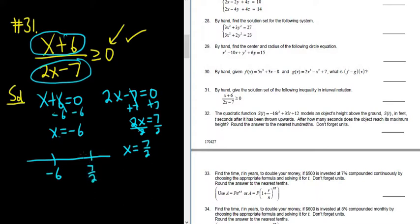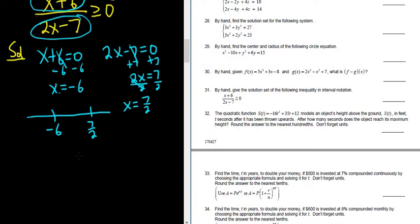Now you have to pick test points. What you're supposed to do is pick numbers and plug them in to your inequality. So we're supposed to pick a number over here and then plug it into our inequality. And if it's true, we shade. And if it's not true, we don't shade. So we have three different regions. So we're supposed to pick three different numbers.